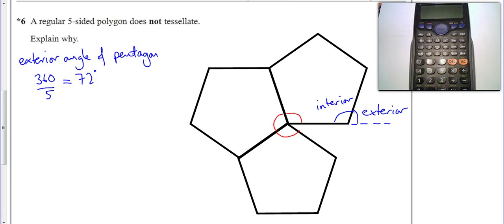Now, if I just switch to red and do the interior angle, well, that's going to be 180 minus 72, which is going to be equal to 108 degrees.